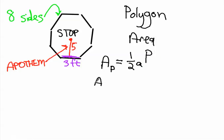So the area of a polygon is going to equal one half, and then we know from earlier that the apothem equals five, so it's times five.